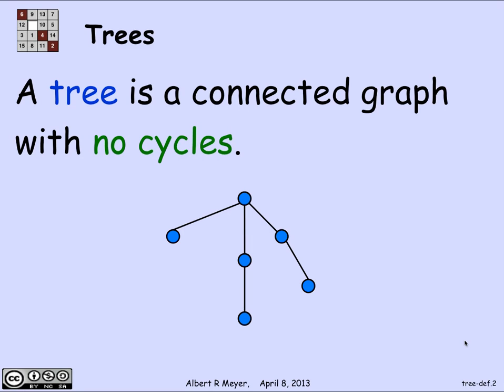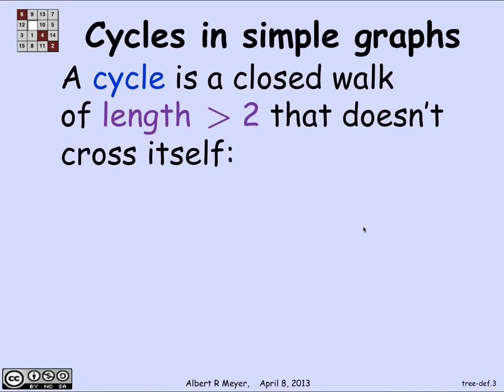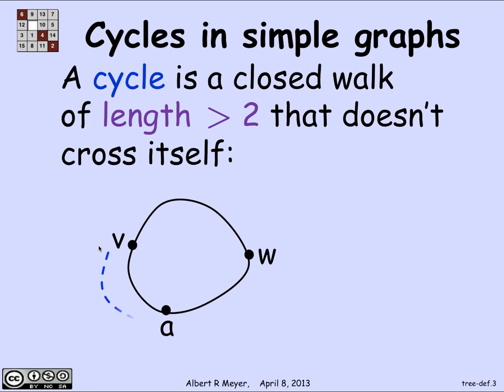In order to make sense of that, we need a definition of a cycle. There's a picture of a typical tree, but to be precise, what's a cycle in a simple graph? It's a closed walk of length greater than 2 that doesn't cross itself. Not crossing itself means it's a path, except that the beginning and end vertex are the same — you start at v, go around to a and to w through distinct vertices, and the path ends where it starts at v. That's what makes it a cycle.